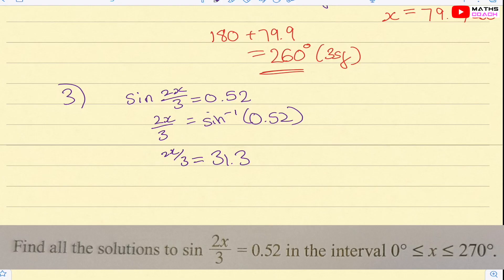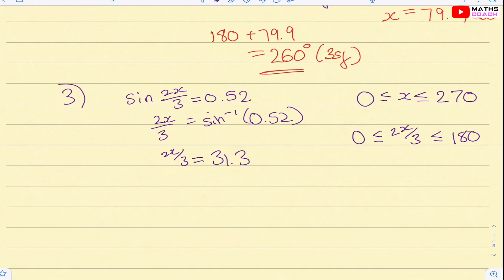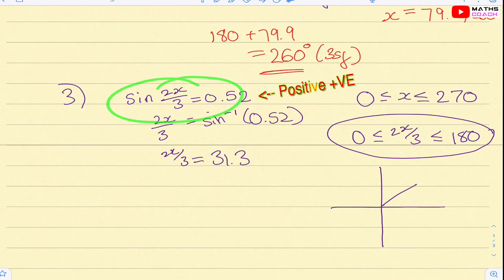So once we've got that 2/3 x is 31.3, we actually need to change the interval. What does that mean? So that means that we need to find x between 0 and 270, but currently we're looking at 2/3 of x. So that means our interval now changes between 0 and 180. All we've done is to say 270 divided by 2/3. So our new interval that first we need to find is this one.